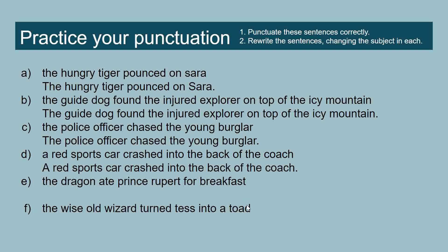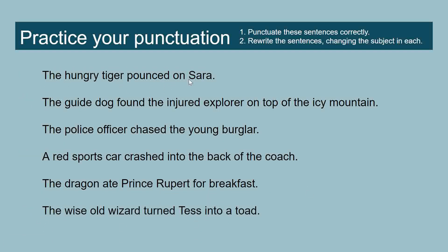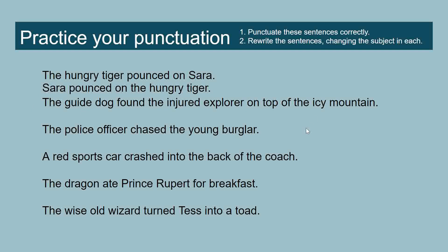'The dragon ate Prince Rupert for breakfast' — here we have a proper noun: Prince Rupert. 'The wise old wizard turned Tess into a toad' — Tess is a name so it has a capital letter. Now for this task, we have to swap the subject with the other noun or proper noun. So instead of 'The hungry tiger pounced on Sara,' we write 'Sara pounced on the hungry tiger' — it makes a funny sentence. We're swapping around the subject with the object.